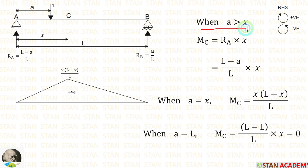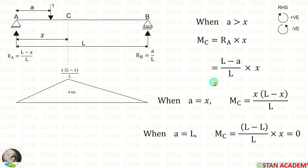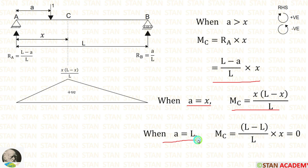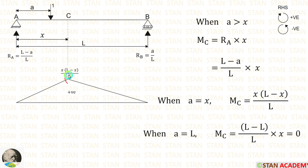When A is greater than X, we have to calculate the bending moment on the left side. On the left side, we are having a load R_A equal to (L minus A) by L, and the distance will be X. So we get (L minus A) by L into X. When A is equal to X, M_C will be X into (L minus X) by L. When A is equal to L, M_C will be 0. Using these values, we can make two points and complete the triangle. This value is the same when calculated on both the left side and the right side.